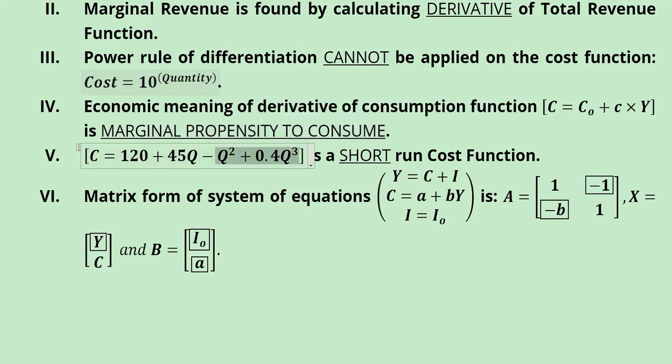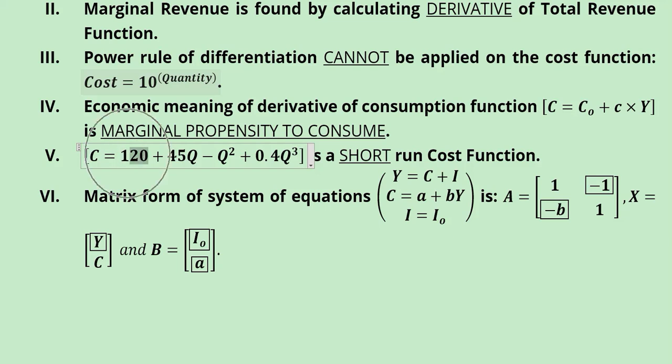The next blank gives a cost function and asks whether it is a short-run or long-run cost function. We can see there is a constant term. In the short run, the fixed cost component is present; in the long run, fixed costs do not remain fixed due to the flexibility of time — they may increase due to inflation, new plants, additional security personnel, or other augmentations. Therefore, since a fixed cost is still present here, this is a short-run cost function.